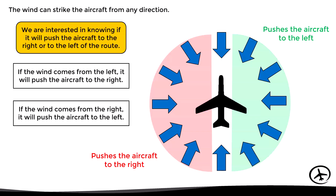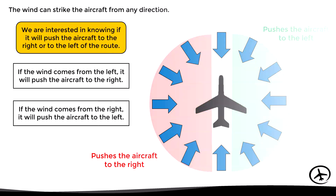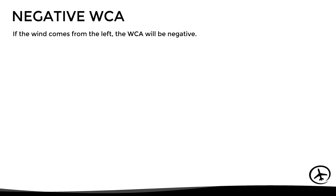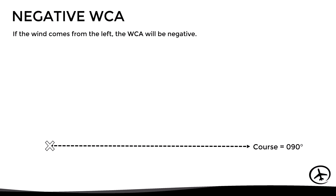With this in mind, it is important to mention that the wind correction angle can be positive or negative depending on the situation. As a general rule, when the wind comes from the left the wind correction angle will be negative. Let's see why.